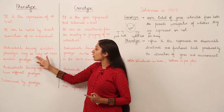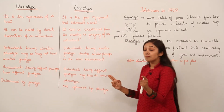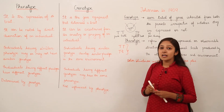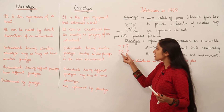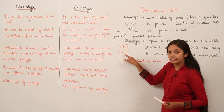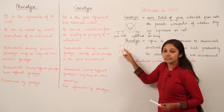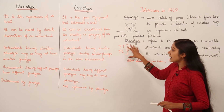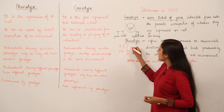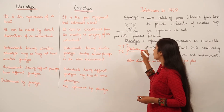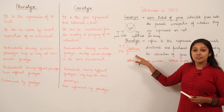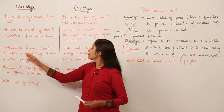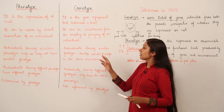Individuals having similar phenotype may or may not have similar genotype. For example, both TT and Tt encode for a tall pea plant, so the phenotype is the same. But the genotype is not the same — TT is homozygous because both are uppercase letters, while Tt is heterozygous because one is uppercase and one is lowercase, meaning one encodes for a dominant character and the other for a recessive character. Yet both are expressed as tallness.